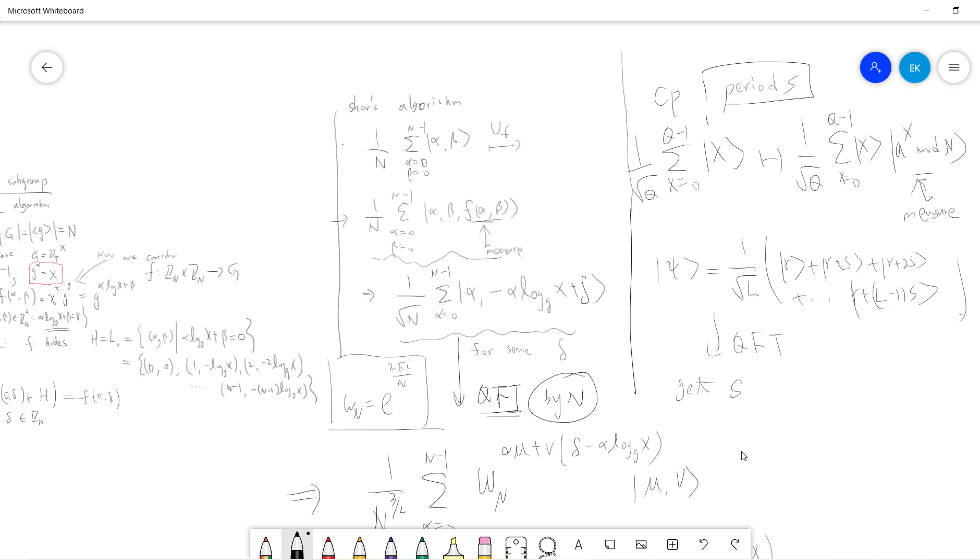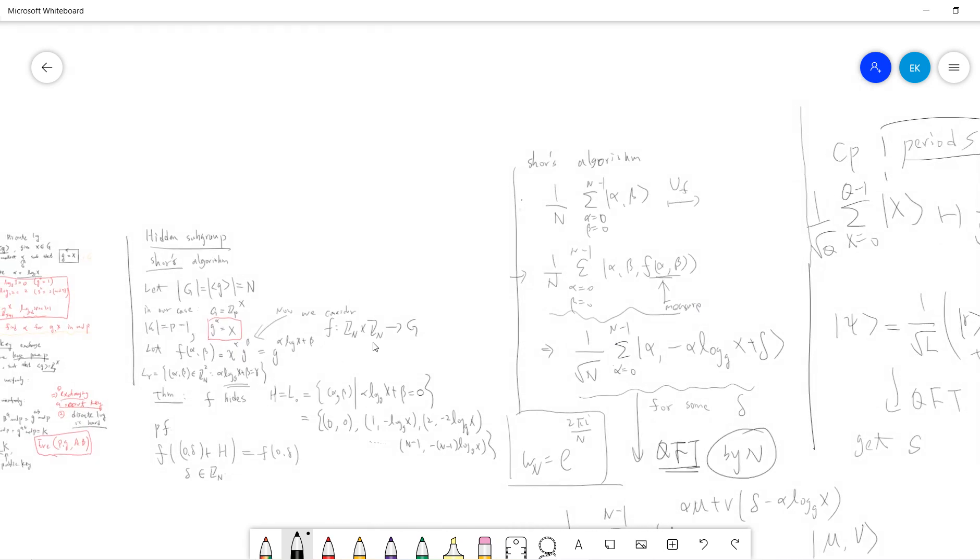In Shor's algorithm we use the integers as a group and we try to find the multiplicative subgroup. In this discrete log we use Z_n cross Z_n. The subgroup is also cyclic and the subgroup is basically this h.